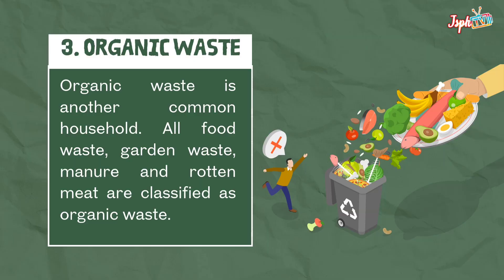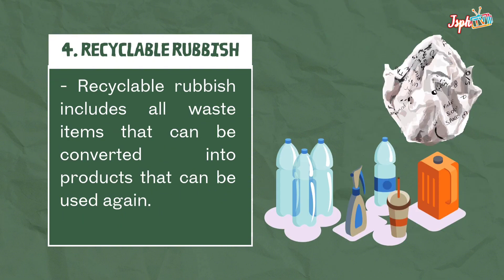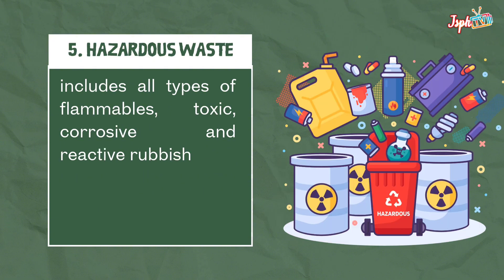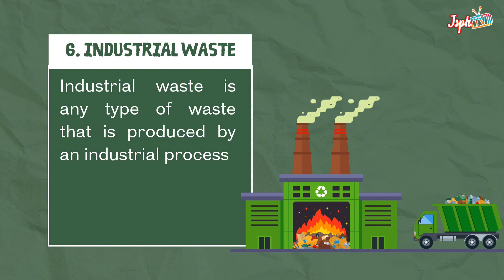Third, organic waste is another common household waste type. All food waste, garden waste, manure, and rotten meat are classified as organic waste. Fourth, recyclable rubbish includes all waste items that can be converted into products that can be used again. Fifth, hazardous waste includes all types of flammables, toxic, corrosive, and reactive rubbish. Sixth, industrial waste is any type of waste produced by an industrial process.